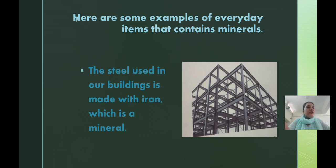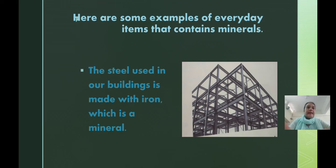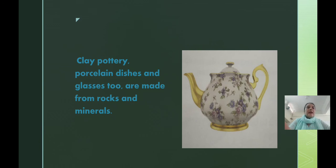In buildings, bridges, and houses, steel is used, and it is made from iron. Clay pottery, porcelain dishes, and glasses too are made from rocks and minerals.